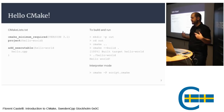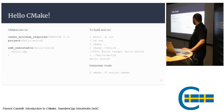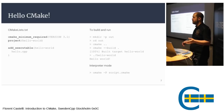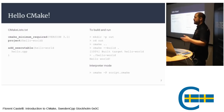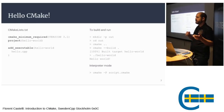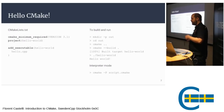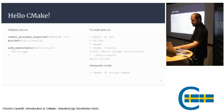CMake also has an interpreter mode — the language is quite flexible and you can invoke scripts directly with it as if it were bash. This is useful on Windows where you don't necessarily have bash, and you may not want to write CMD or PowerShell scripts. CMake can always serve as a cross-platform fallback for scripting.